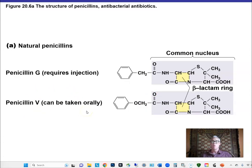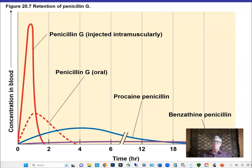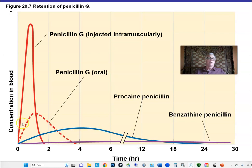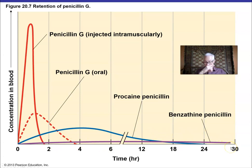Ampicillin has extended host range — it works on both gram-positive and gram-negative bacteria. The key change is adding an amine group to the structure. Different forms of penicillin also differ in how long they persist in the blood: penicillin G is absorbed quickly but declines quickly, while benzathine penicillin — two penicillins linked together — has a much lower peak concentration but is much longer lasting, making it an important semi-synthetic variety.